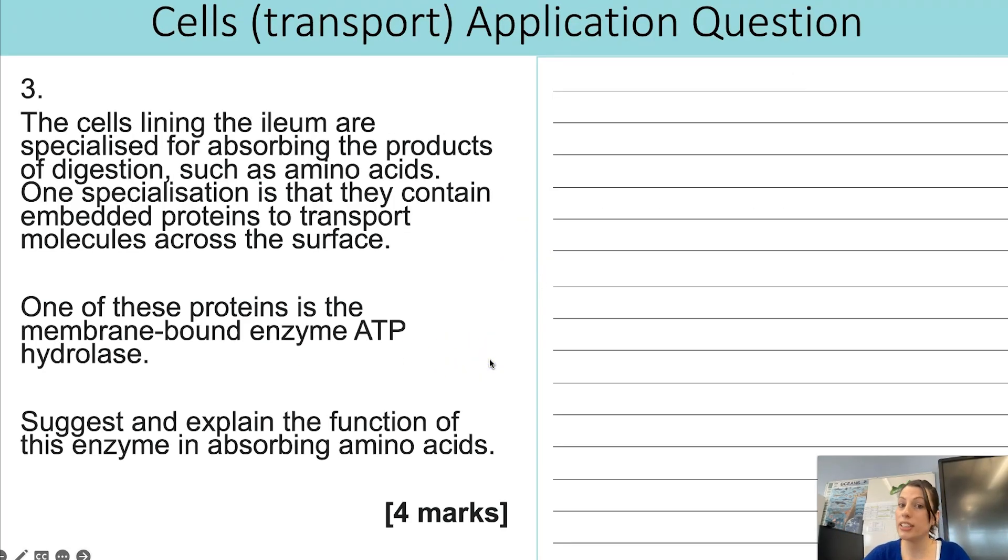Right. Next question is an application question. It's still within the cells topic, but it's linking to transport across membranes. So as ever, get that highlighter out and let's start picking out the key information. The cells lining the ileum are specialized for absorbing the products of digestion, such as amino acids.